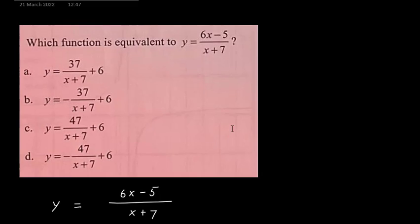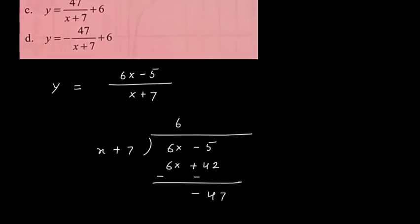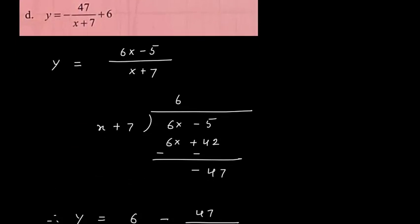Next question. Which function is equivalent to y equal to 6x minus 5 upon x plus 7. Here the numerator has the same degree as that of the denominator. So we can use the long division method and divide 6x minus 5 by x plus 7.